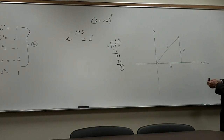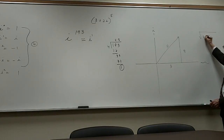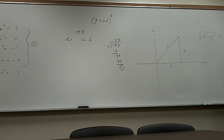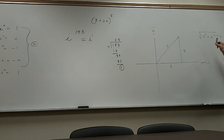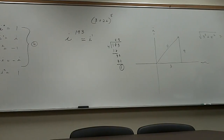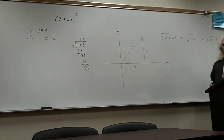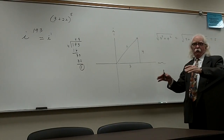So 3 squared plus 4 squared equals 5 squared — that's how we get the 3-4-5 triangle using the Pythagorean theorem. Everybody remembers the Pythagorean theorem.